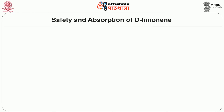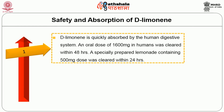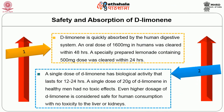Regarding the safety level of D-limonene: it is quickly absorbed by the human digestive system and an oral dose of 1600 milligrams in humans was cleared within 48 hours. A specially prepared lemonade containing a 500 mg dose was cleared within 24 hours. A single dose of D-limonene has biological activity lasting 12 to 24 hours. A single dose of 20 grams of D-limonene in healthy men had no toxic effects. Even higher dosages are considered safe for human consumption with no toxicity to the liver or kidneys.